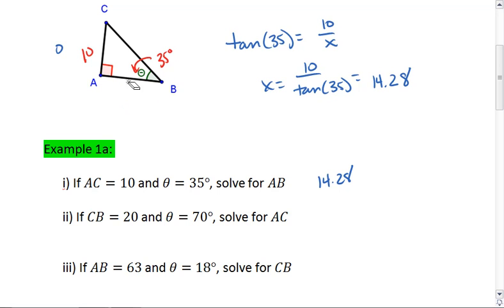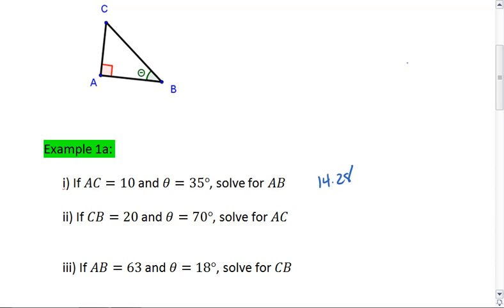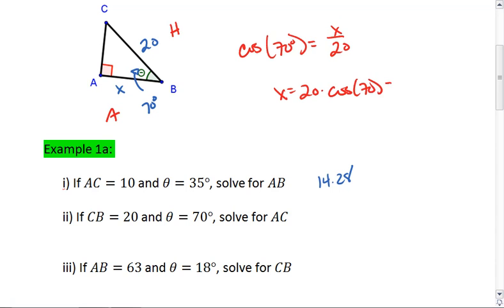Let's try the second one. We are told that CB is 20, and that theta is 70 degrees. We want to solve for AB. In this case, we're using hypotenuse and adjacent, so we use cosine. Cosine of 70 degrees equals x over 20. x equals 20 times cosine 70, which equals 6.84.